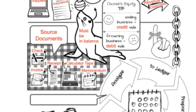Then we have a memorandum. A memorandum is a catch-all — it's written on numbered, specific paper, but it's used any time there is not another source document. Any time there's not another source document, an accountant or someone in the business will write a memorandum to represent the start of that paper trail.